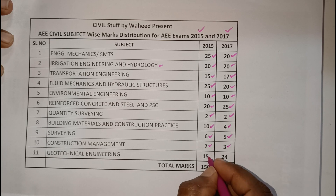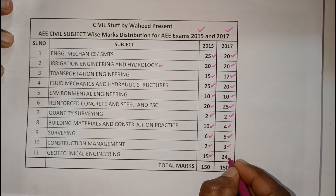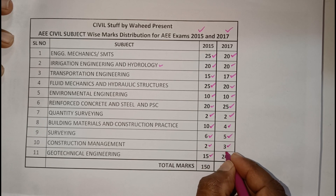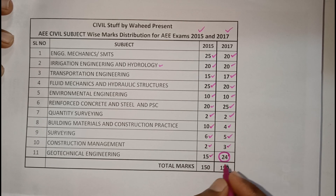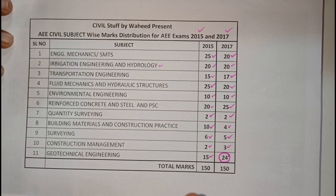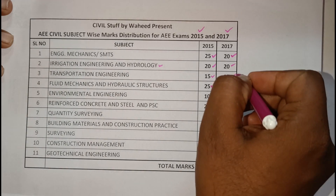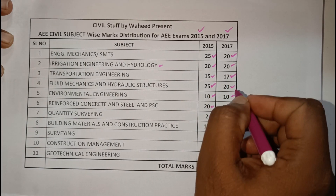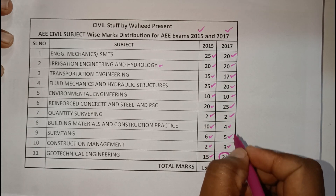Geotechnical engineering covered 15 marks in 2015 and 24 marks in 2017. I noticed some questions related to rock mechanics and engineering geology were also included, so there may be a variation of two to three percent in this area.